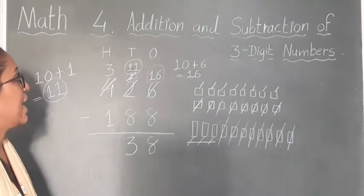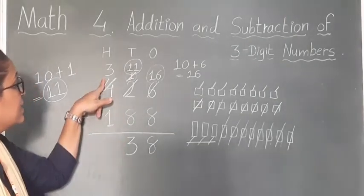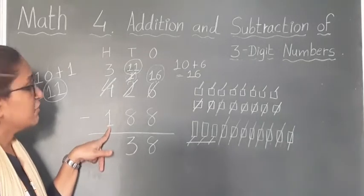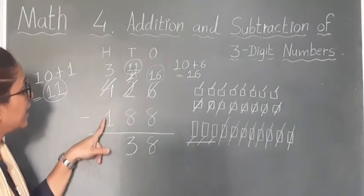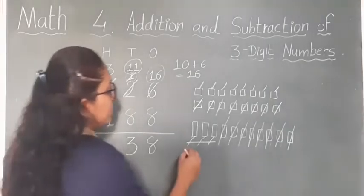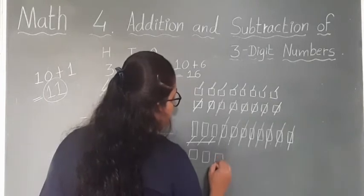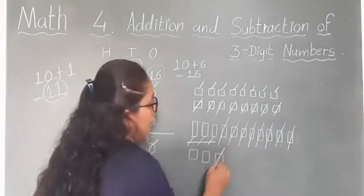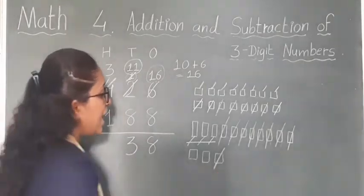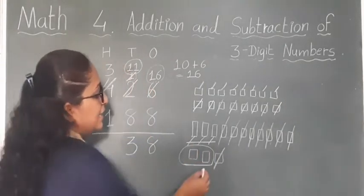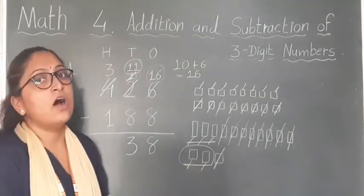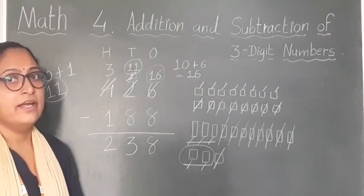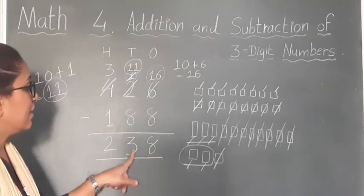Now in the third step we come to the 100s place. We can see now we have 3 hundreds, and here we have 1 hundred to subtract. So I am going to draw 3 sheets of 100s: 1, 2 and 3. Now we have to cut 1 hundred. Counting the remaining strips of 100s: 1 and 2 — we got 2 hundreds. So we write down 2 in the 100s column. Here you can see we got the answer 238.